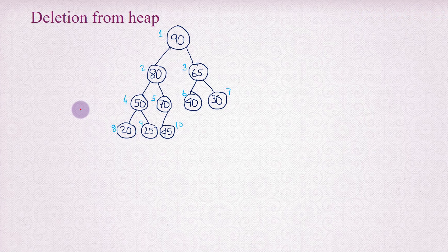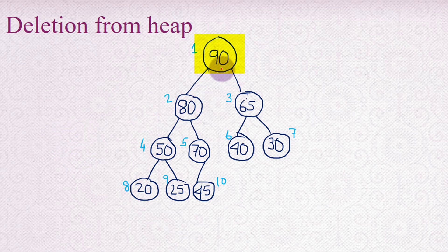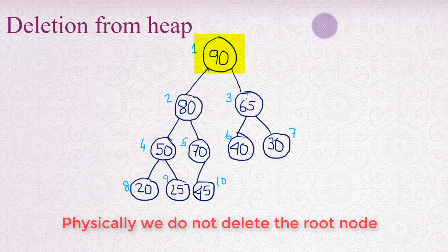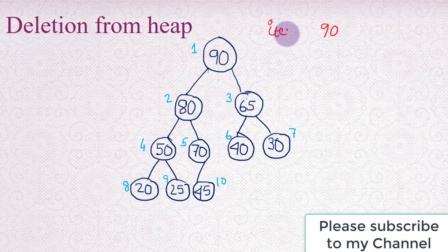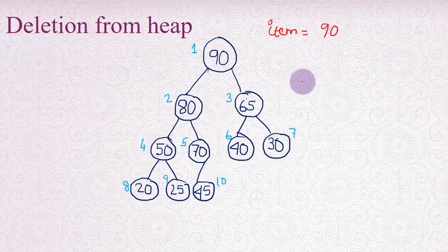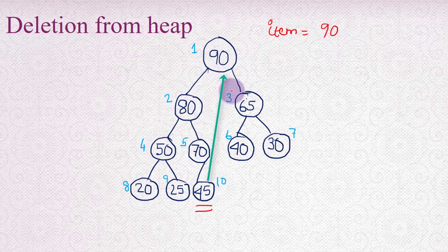Here on the screen we have a max heap and 90 is the largest number at the root. If we delete 90 from the heap, we physically do not delete the root node - we only take out the content from the root. So 90 will be taken out of the root and kept in a temporary variable called 'item'. Then we take the content of the last node of the heap and copy it to the root element.